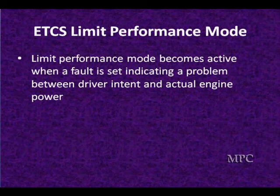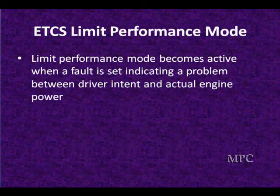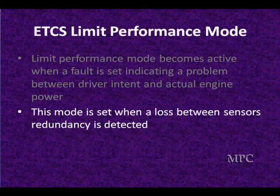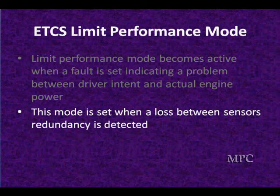Limited performance mode is a different mode. It becomes active when a fault is set indicating a problem between driver intent and actual engine power. Limited performance mode is set when a loss of sensor redundancy is detected. We have redundant sensors on the throttle position — as the throttle motor moves the throttle — and redundant sensors at the accelerator pedal position. When one set of those don't agree, we're in this mode.